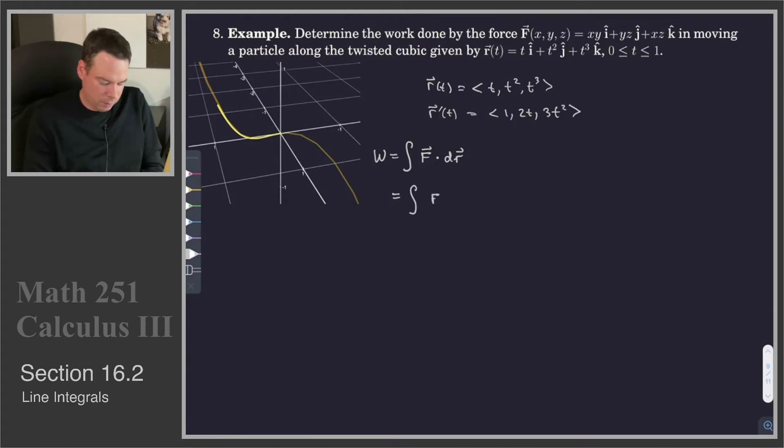That is our vector field evaluated at the points on the curve dotted with the tangent vector to the point on the curve dt, where t ranges from 0 to 1. We're integrating from 0 to 1, F at r(t). F is xy, so the first component is t times t squared or t cubed. The next component is yz, so t squared times t cubed or t to the fifth. The next component is xz, which is t times t cubed or t to the fourth. That's dot 1, 2t, 3t squared, dt.